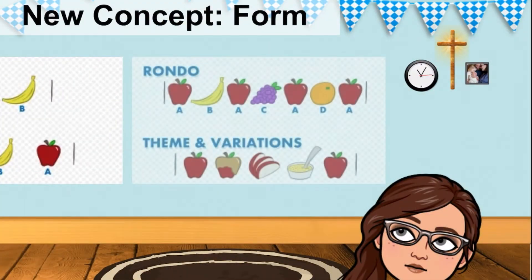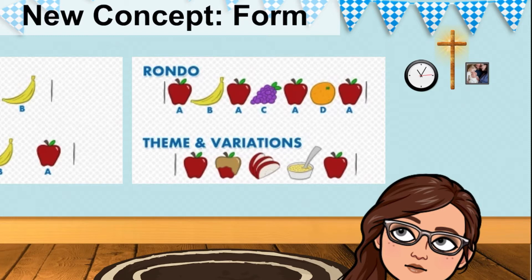The next two types include rondo, also known as A, B, A, C, A, D, A, and theme and variations. It looks like there's an apple and then it turns into a caramel apple, then sliced apple, applesauce, and back to that apple. So it's the same thing that's changed around a couple different ways.